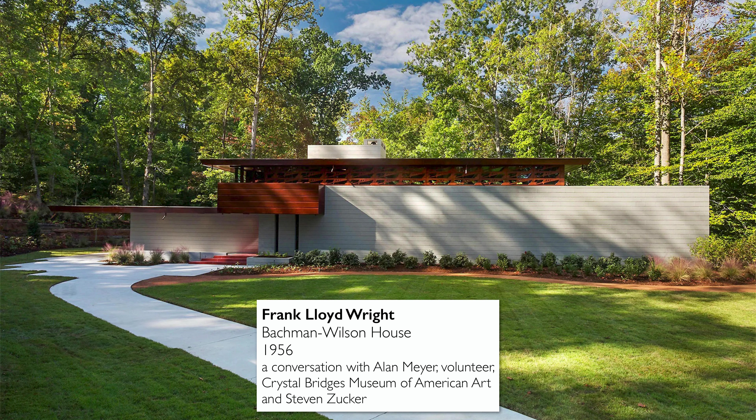When Wright decided to do Usonian structures, he wanted to bring the cost down to where a middle-class family could afford. Stained glass is not cheap, so he came up with the idea of sandwiching a piece of glass between two wood cutouts. Wright adopted the term 'Usonia' to refer to the art and architecture of the United States.